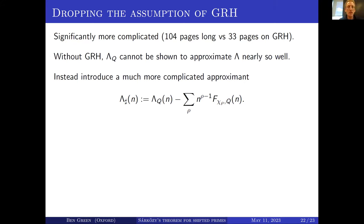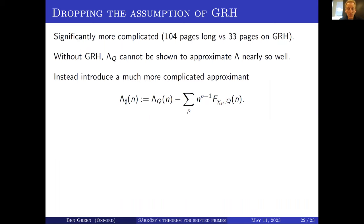Here's roughly what it looks like. We call it λ^♯(n). It's the approximant λ_Q(n) from before, but with a correction term corresponding to a sum over all zeros — not just of zeta, but of L-functions of small conductor — of n^{ρ−1} times a term F, which I won't describe. Rho ranges over non-trivial zeros of all Dirichlet L-functions of conductor up to a small power of n.